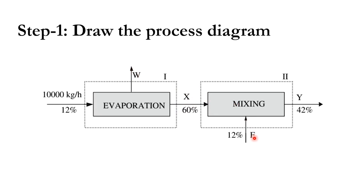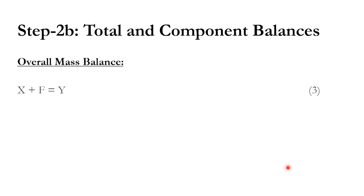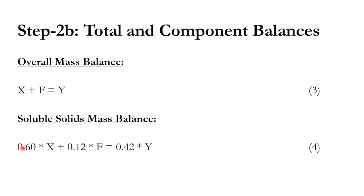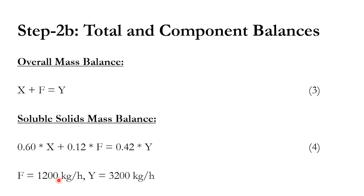For envelope two, the overall mass balance gives: X + F = Y, where X = 2,000 kg/hr. The soluble solid balance gives: 0.6 × X + 0.12 × F = 0.42 × Y. Solving simultaneously: F = 1,200 kg/hr and Y = 2,000 + 1,200 = 3,200 kg/hr of final product at 42% soluble solids.